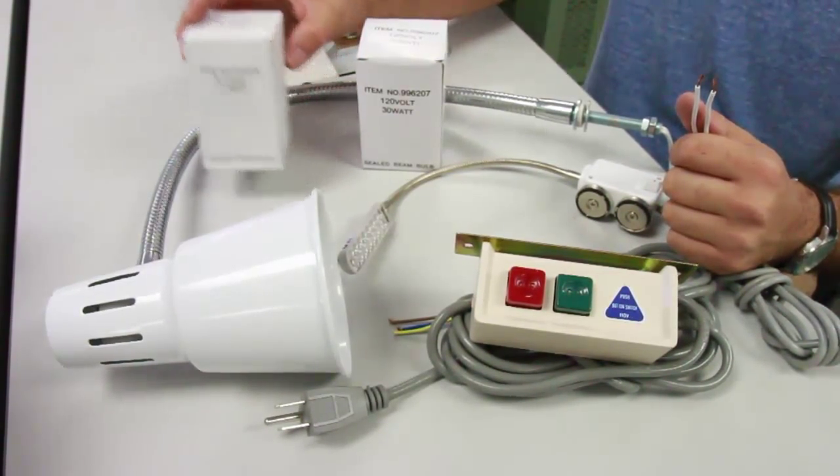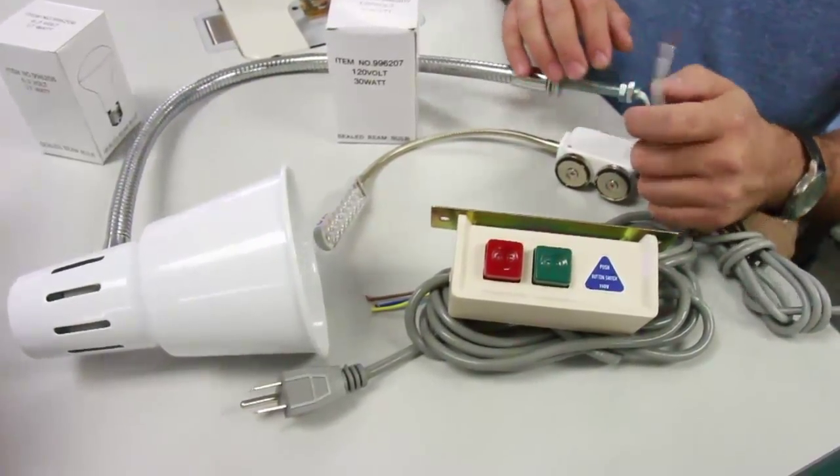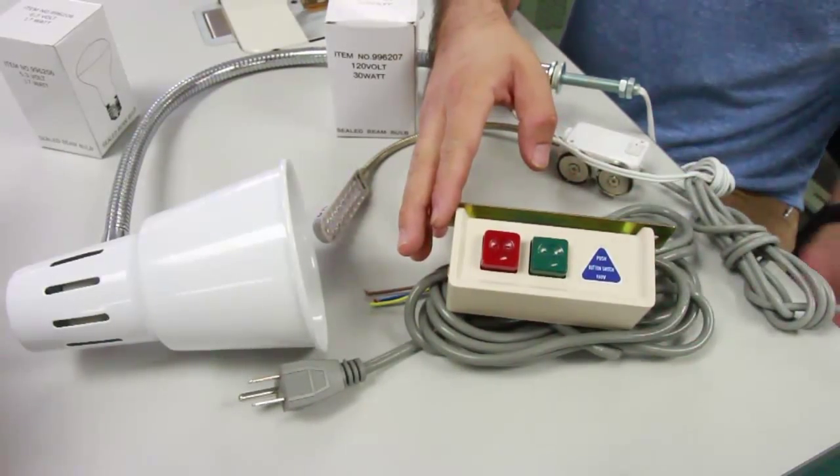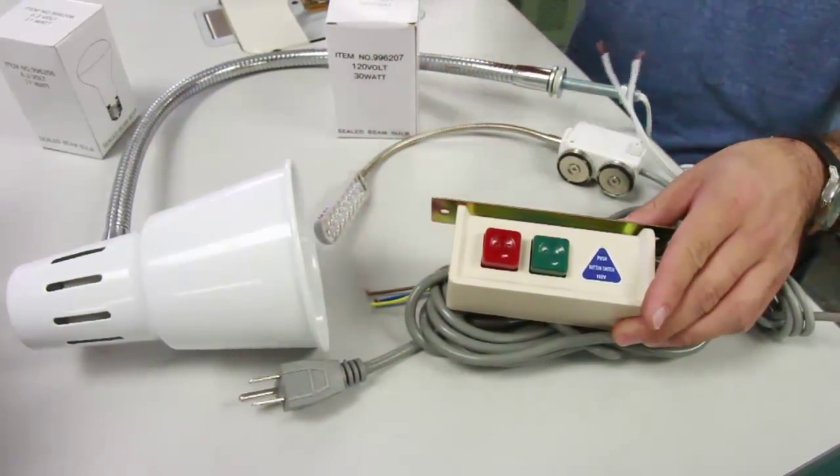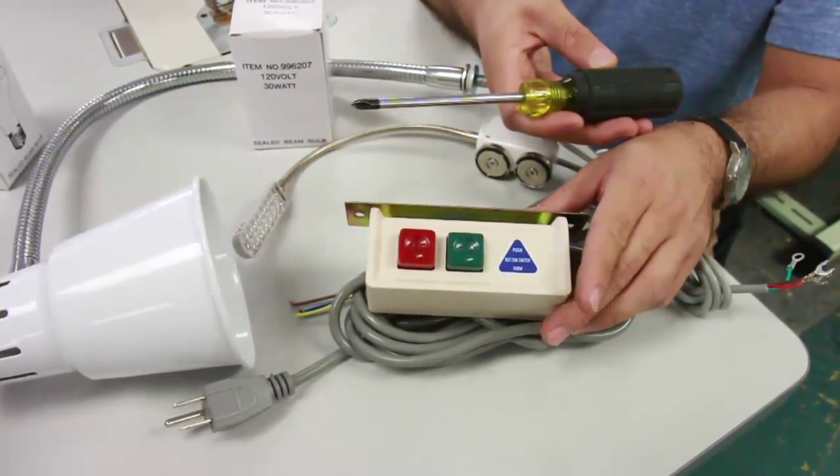So let's just go with the traditional way on the gooseneck lamp. So this is our start stop switch. You'll find this probably usually underneath the table of the sewing machine. All we need for the job is a regular Phillips screwdriver.